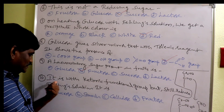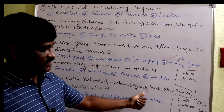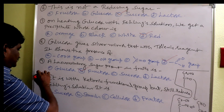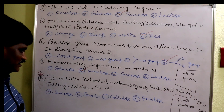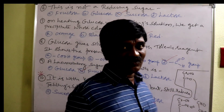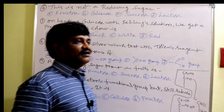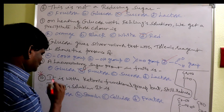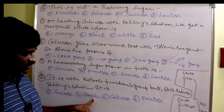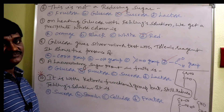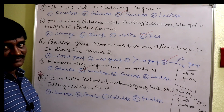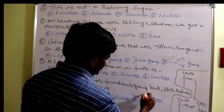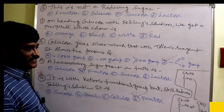Which sugar has a ketonic functional group but still reduces Fehling solution? Very very important: fructose has a ketonic functional group but still reduces Fehling solution. This is because fructose is an alpha-hydroxy ketone. Answer: fructose.